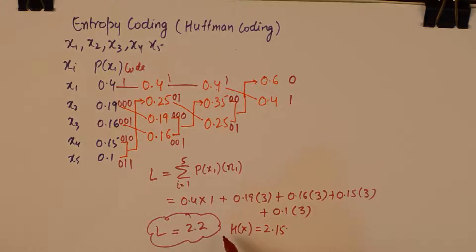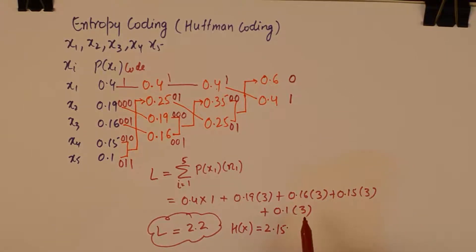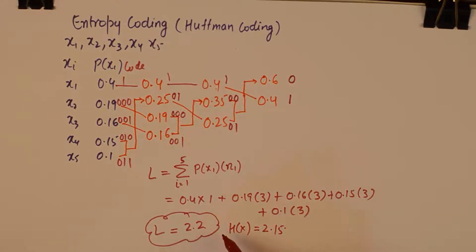The average code length was 2.25 in the case of Shannon-Fano coding and this has come out to be 2.2 in case of Huffman coding which is more closely related to the entropy of the system. And if you calculate the efficiency which is entropy upon the average length calculated by the coding this also comes out to be equivalent to 97.7% which is better than 95% what we got in the case of Shannon-Fano coding.